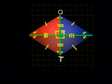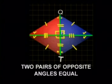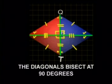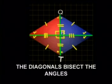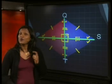Next we look at the rhombus. It has all four sides equal and two pairs of opposite angles equal. The diagonals bisect each other. The diagonals bisect at 90 degrees. The diagonals bisect the angles of the rhombus.